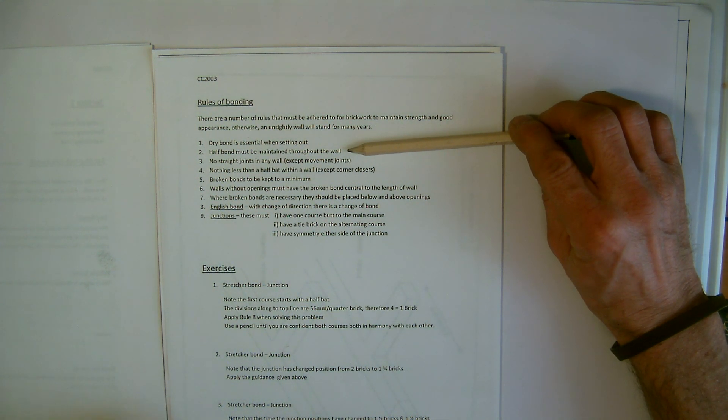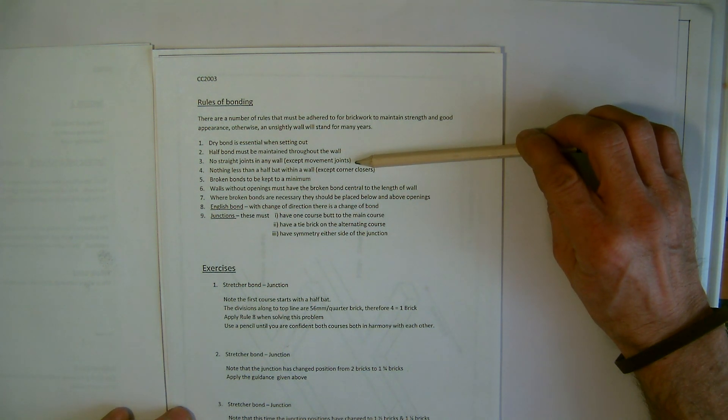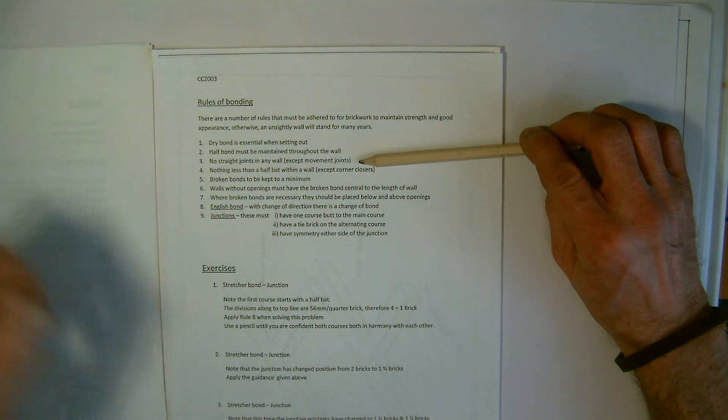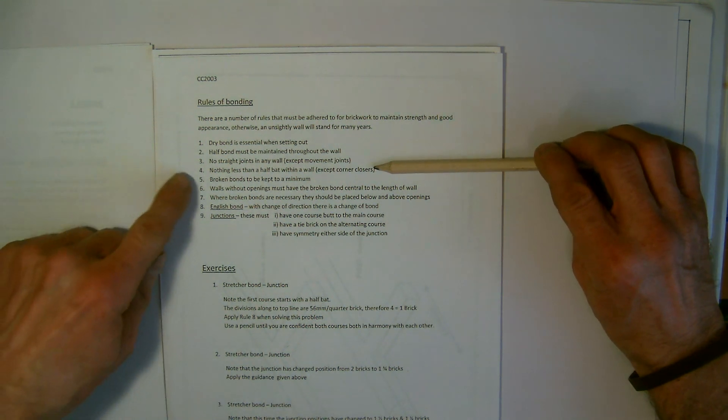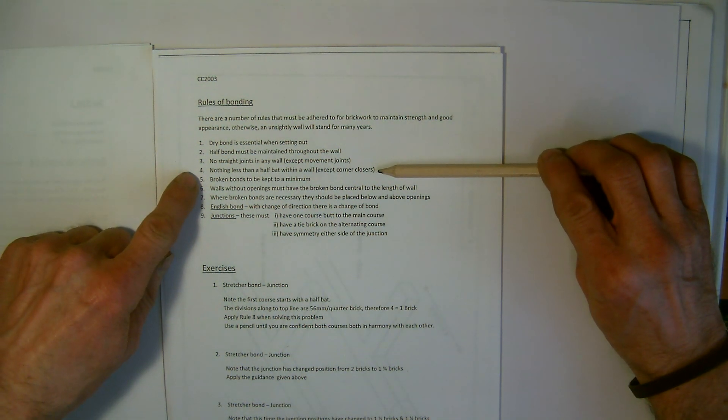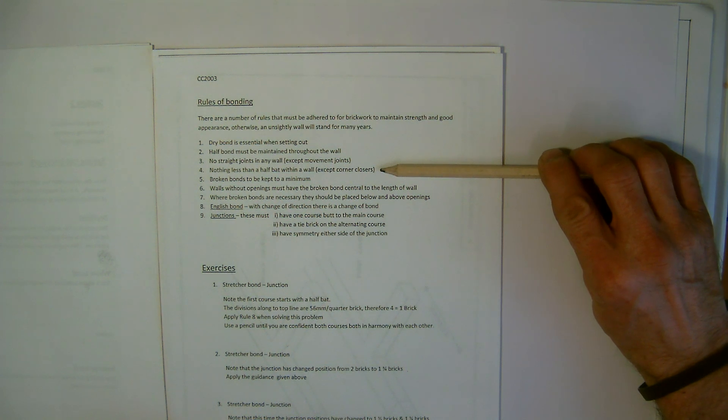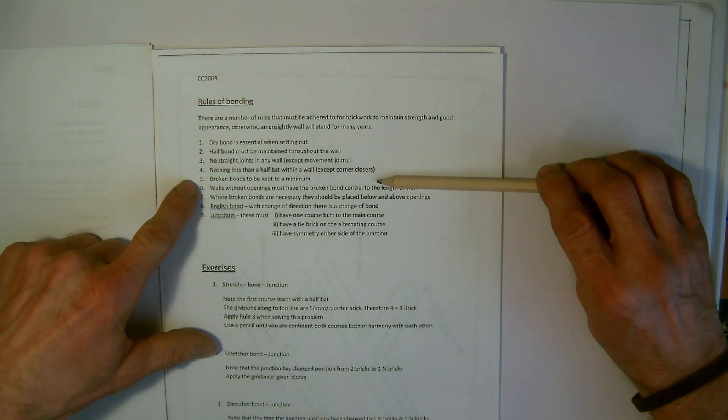But we go into those ones when we actually deal with solid work. The other rule that we must always remember is rule three: no straight joints in any wall except where you have movement joints. And we have rule four, which is nothing less than a half within a wall except on corner closures. Again, that is with solid work English and Flemish bond. And broken bonds must be kept to a minimum.